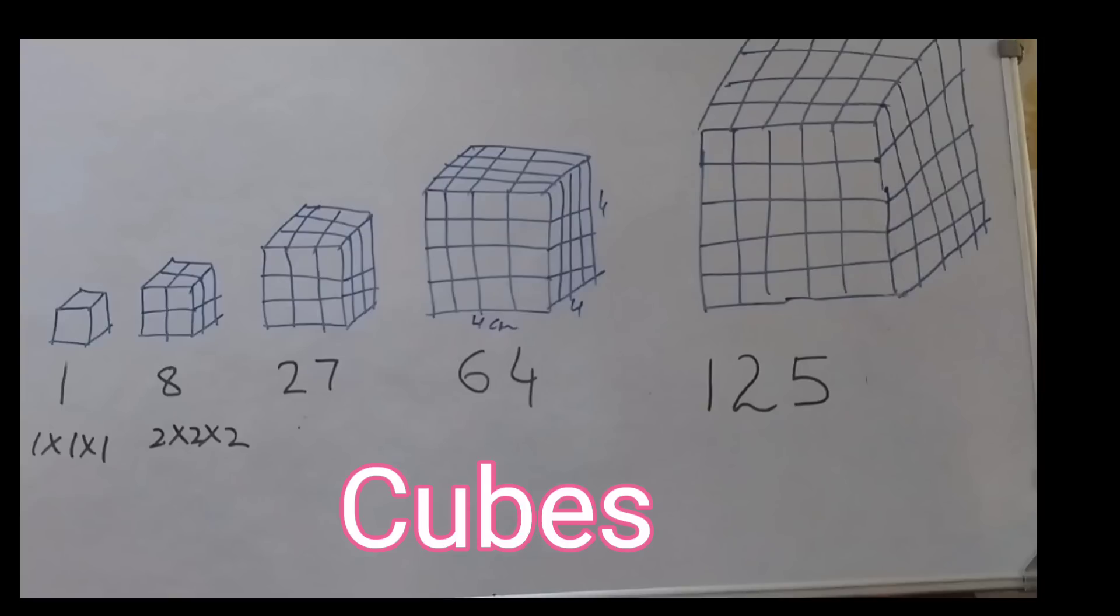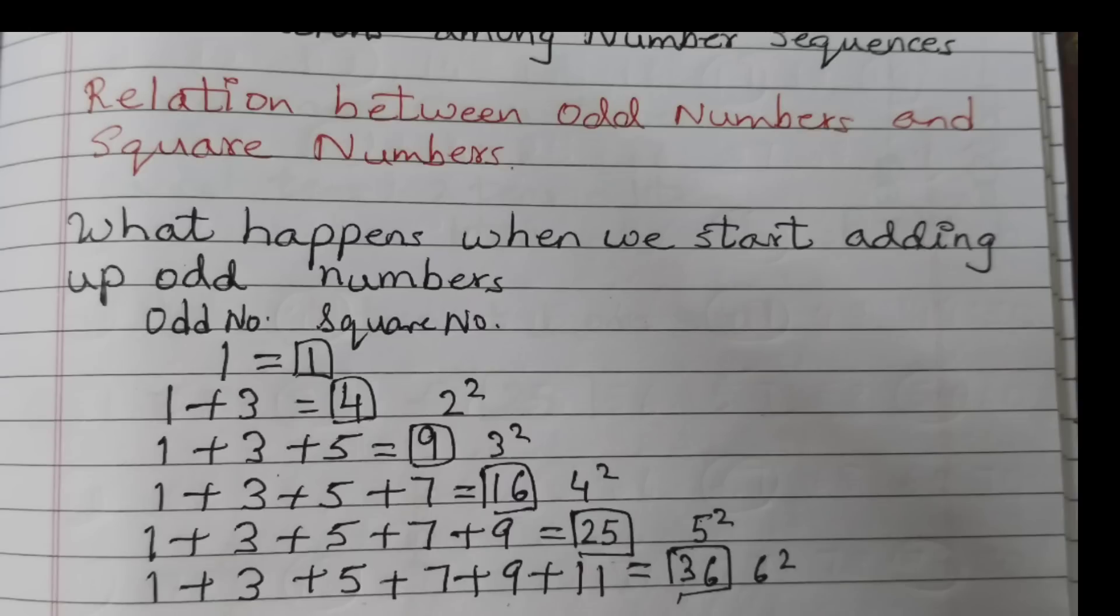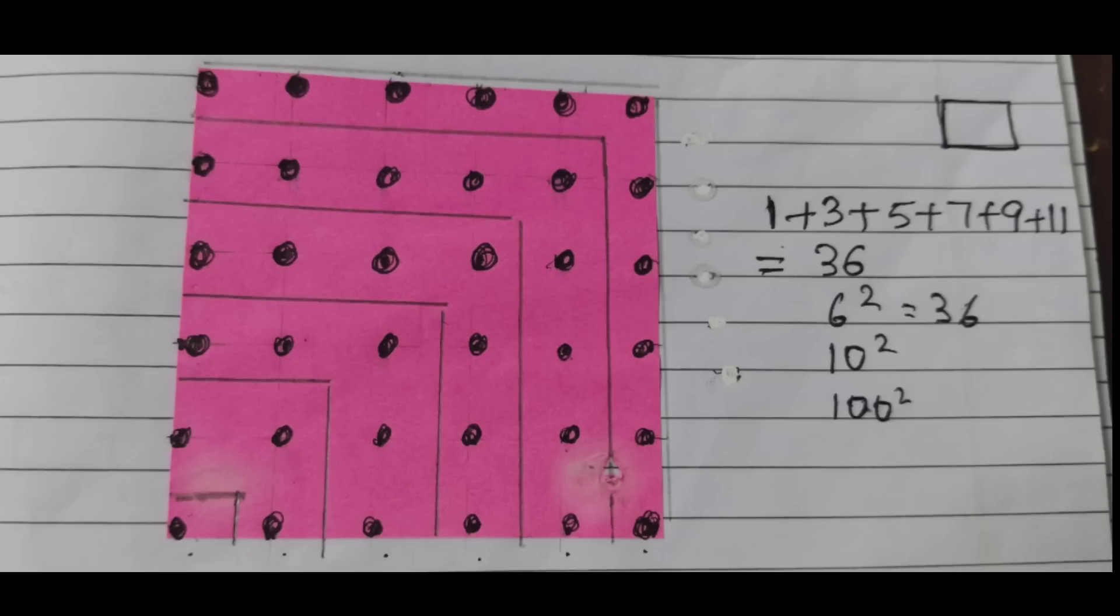Next subtopic is 1.4, relations among number sequences. So here you will try to find out what is the relation between two different number sequences. For example, what is the relation between odd numbers and square numbers? What happens when we start adding up odd numbers? So you will see that when we start adding up odd numbers, we get square numbers. Similarly, when you start adding the counting numbers up and down, again you will get square numbers.